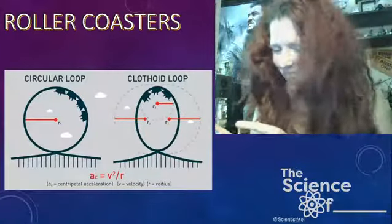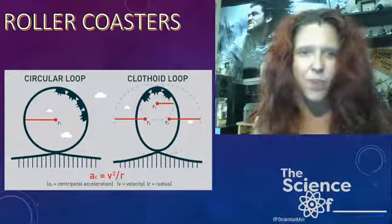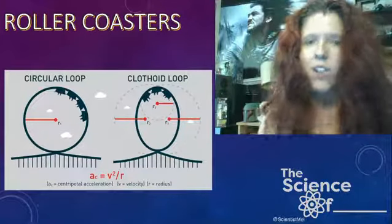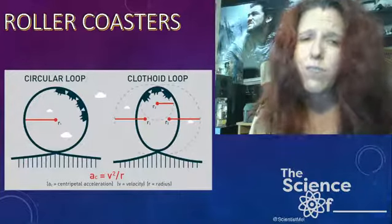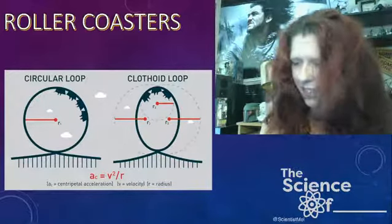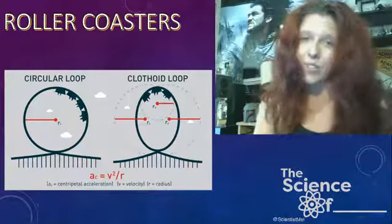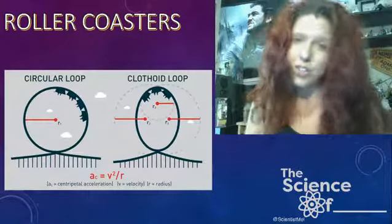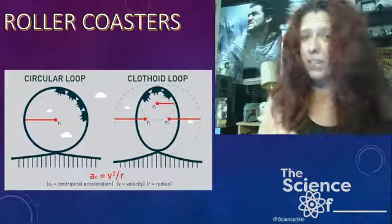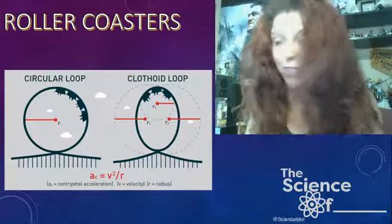Here's the centripetal acceleration equation: velocity squared over the radius. Notice that many roller coasters don't have a circular loop — they have what's called a clothoid loop. Clothoid loops allow multiple points of a different radius, and this difference in radius allows centripetal acceleration to increase, meaning you don't have to go as fast to complete the loop. Being able to make it more of a teardrop shape helps because it allows less speed to complete the loop while keeping riders safe.